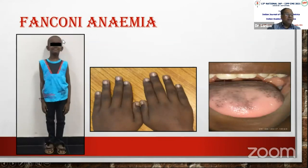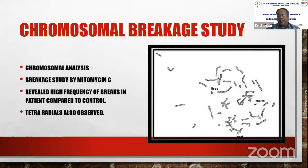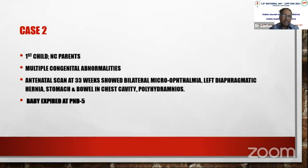A child with Fanconi anemia — classical features of hyperpigmentation, aplastic anemia, microcephaly, and knuckle pigmentation. A chromosomal breakage study using mitomycin C protocol is required. The karyotype shows multiple breaks and joints between multiple chromosomes — triradials — indicating a chromosomal breakage syndrome. Other conditions such as Bloom syndrome and ataxia-telangiectasia also show this type of breakage pattern.